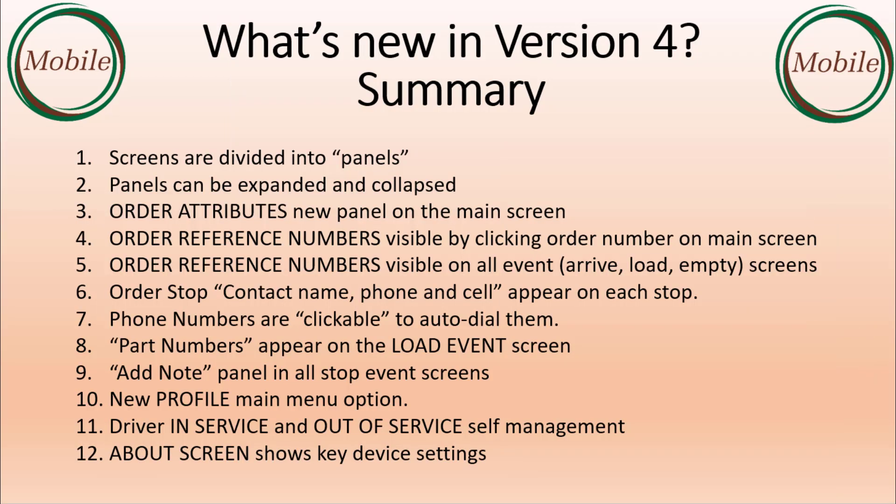Here's a summary of what's new in version 4: First, the screens are divided into panels. Two, the panels can be expanded and collapsed. Three, order attributes are a new panel on the main screen. Four, order reference numbers are visible by clicking on the order number on the main screen. Five, order reference numbers are visible on all events — arrive, load, and empty screens. Six, the order stop contact name, phone, and cell numbers appear on each stop. Seven, phone numbers are clickable to auto dial them. Eight, part numbers appear on the load event screen. Nine, the add note panel is added in all stop event screens. Ten, there's a new profile main menu option that shows information about you. Eleven, the driver in and out of service self-management functions. And twelve, the about screen shows key device settings.